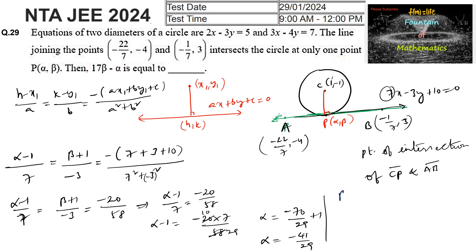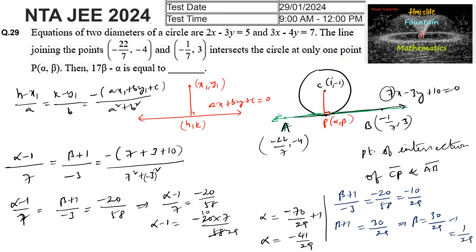For β: β plus 1 over minus 3 equals minus 20 over 58, which is minus 10 over 29. So β plus 1 equals 30 over 29, giving β equals 30 over 29 minus 1 equals 1 over 29. Now, 17 times (β minus α) equals 17 times (1/29 minus (minus 41/29)) equals 17 times (42/29)... equals 17 times 58 over 29 equals 17 times 2 equals 2. The answer is 2.